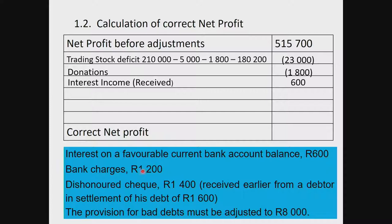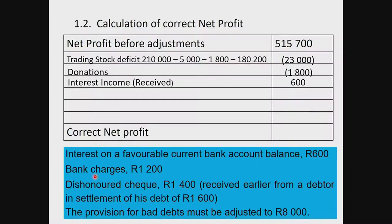Bank charges form part of operating expenses — this is what the bank charges us for services such as cashing cheques, the deposit book, service fees, and credit card levies. Bank charges will decrease the net profit, so the 1,200 rand is placed in brackets.